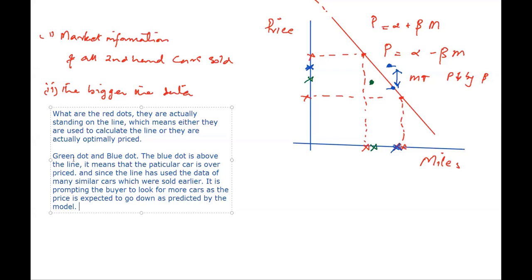The dot is above the line, so the property of this dot is that it is overpriced — or in finance terms, overvalued. Just like we say today that someone's assets are above their income so they must have done something wrong, here the model is telling us that for a particular mileage there is a particular expected price, and this blue dot is not following that model. As a buyer, the car is expensive compared to the measuring scale — he should look for more sellers with similar cars at a lower price.